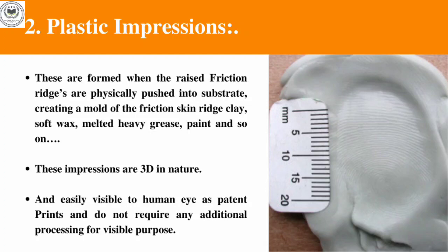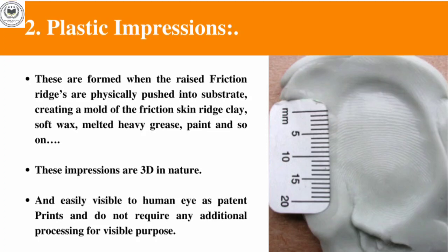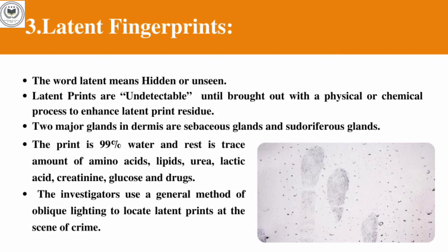Plastic impressions are formed when the raised friction ridges are physically pushed into a substrate, creating a mold of the friction ridge on clay, soft wax, melted heavy grease, paint, and so on. These are 3D in nature, having length, width, and height. They are easily visible to the human eye and do not require any additional processing for visualization.